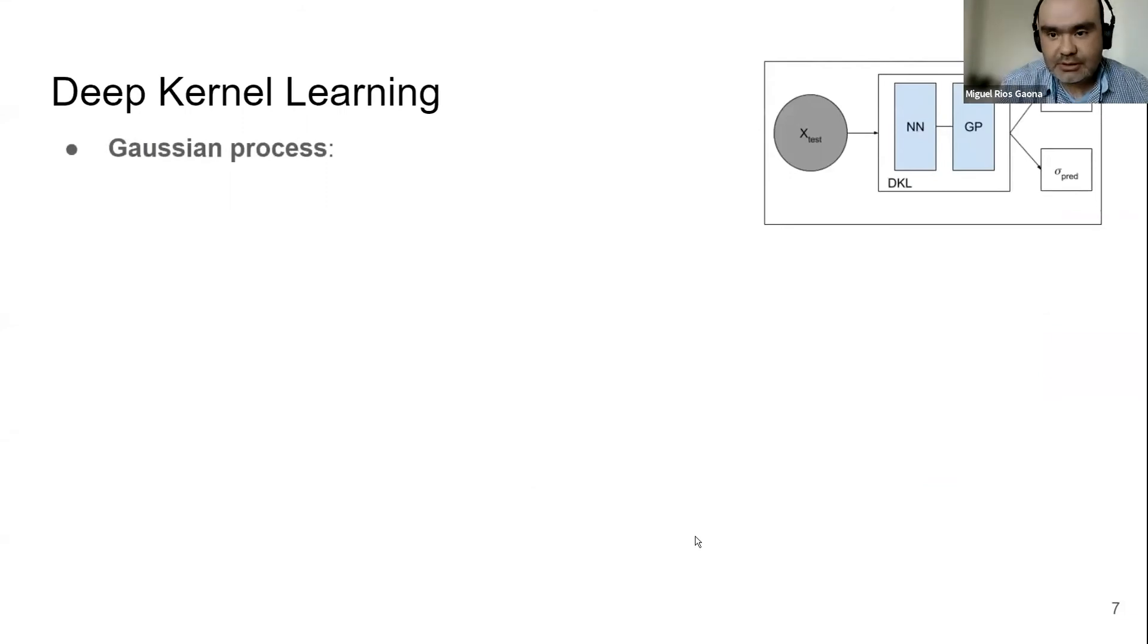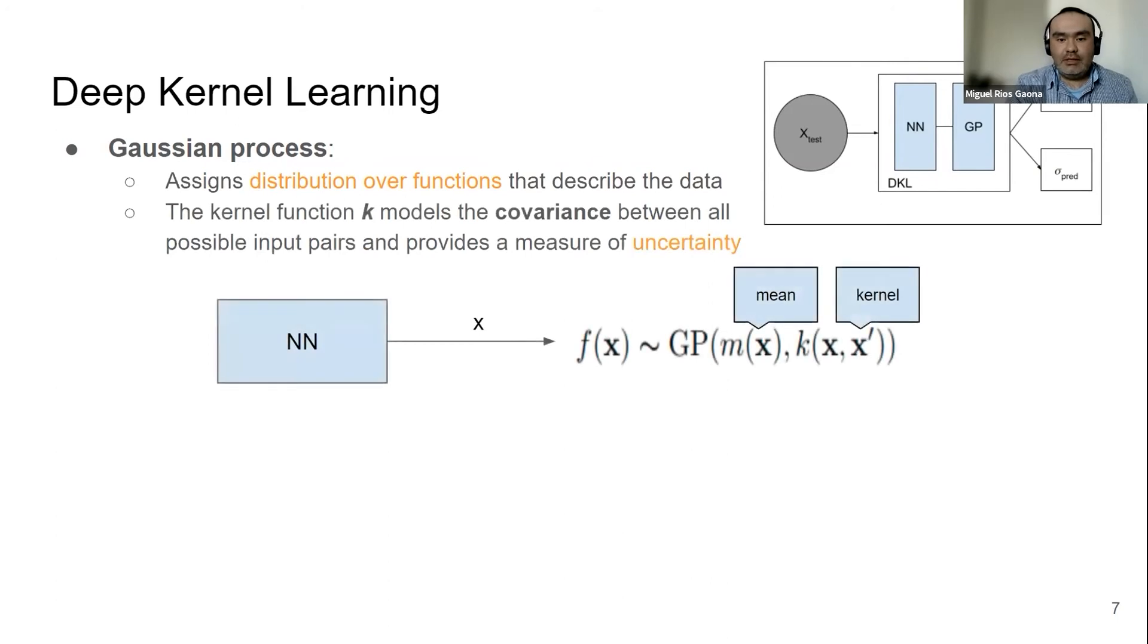So what is a Gaussian process? Let's zoom in a little bit. The Gaussian process assigns a distribution over functions that describe our input data. And like we saw before, the neural network is going to produce these input features or representations.